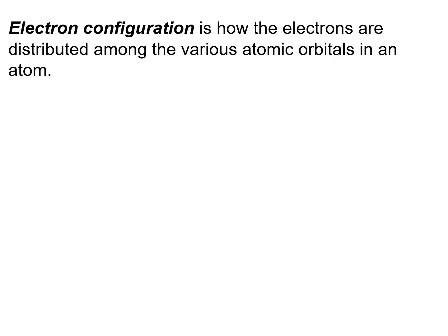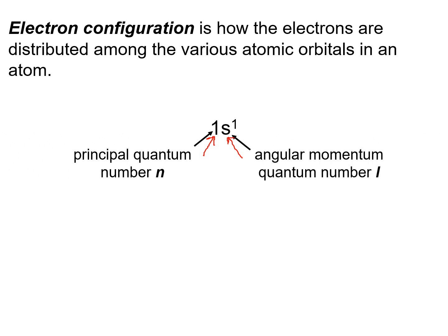Electronic configuration is the distribution of electrons in different atomic orbitals in an atom. We represent electrons in different orbitals using quantum numbers. The first number is the principal quantum number, which tells us about the shell energy level. The second letter comes from the azimuthal or angular momentum quantum number, which tells us about the orbital. The superscript number indicates how many electrons are in that orbital.